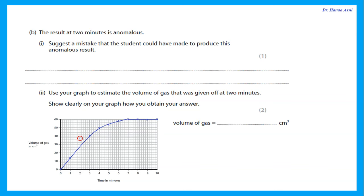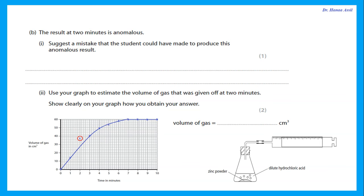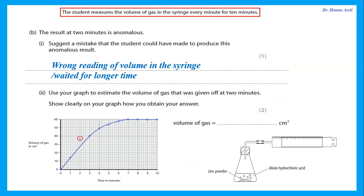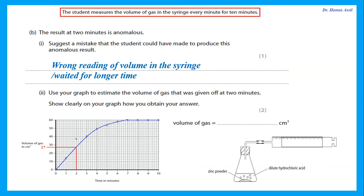A mistake that the student could have made to produce the anomalous result: either a wrong reading of the volume in the syringe, or the student did not take the reading after one minute — maybe they waited for a longer time, which is why they got a higher volume than expected. Use the graph to estimate the volume at two minutes: draw a line going up from two minutes to the curve, then horizontally to the volume axis — the answer is 27 cm³. Always show on your graph how you obtained your answer.